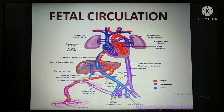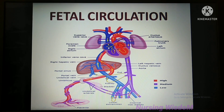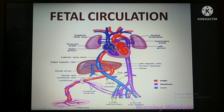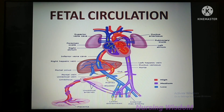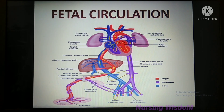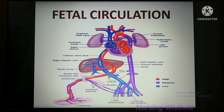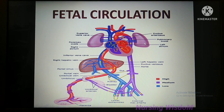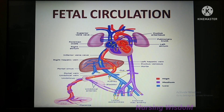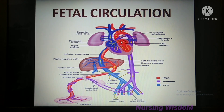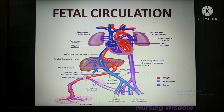Blood from the inferior vena cava goes to the right atrium. From the right atrium, most of this highly oxygenated blood goes to the left atrium via the foramen ovale, which is the opening between the right and left atrium. The blood moves from right atrium to left atrium because the pressure on the right side of the heart is higher than the left side, and blood always flows from high pressure to low pressure. This bypass is needed because the lungs are non-functional — the blood is already oxygenated from the placenta and does not need to go to the lungs.